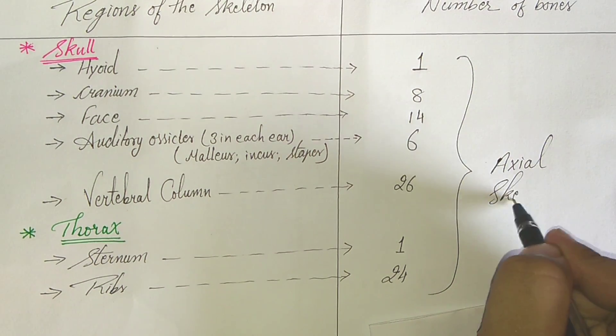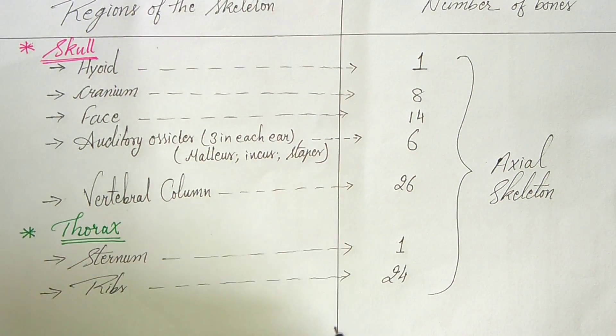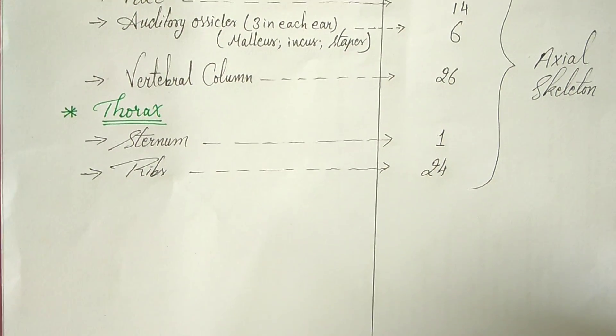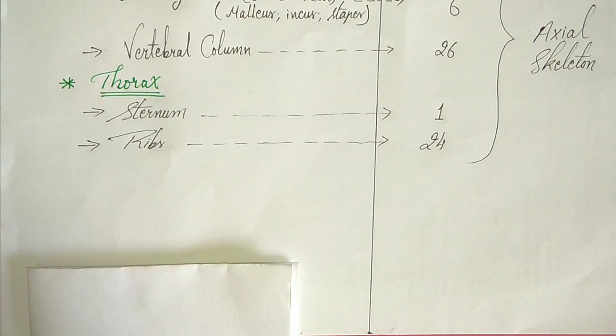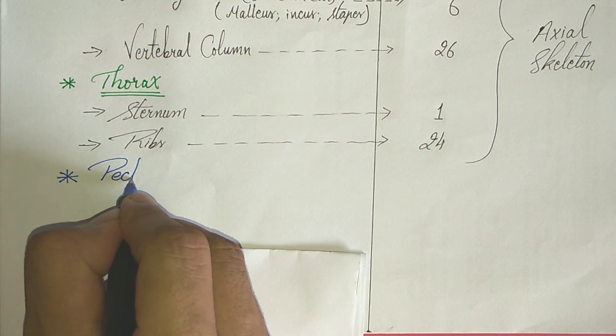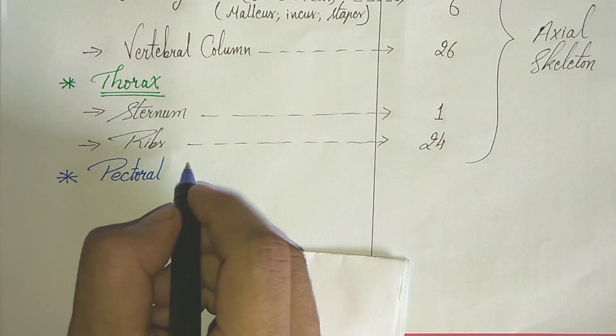And this is axial skeleton. So axial skeleton consists of around 80 bones and is composed of six parts: ossicles of the middle ear, hyoid bone, rib cage, sternum and vertebral column.